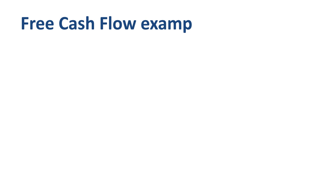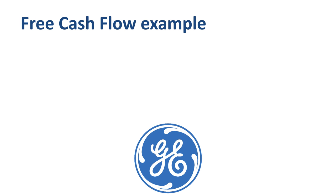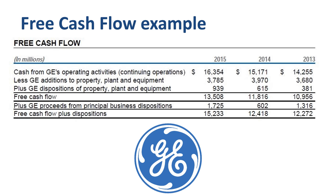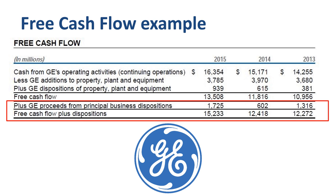The last example is General Electric, whose free cash flow has gone up in recent years. Like ExxonMobil, GE's definition adds cash inflows from selling property, plant and equipment, as well as cash inflows from business dispositions. For GE, the bottom line is the total of free cash flow plus dispositions.